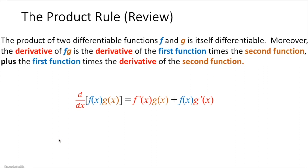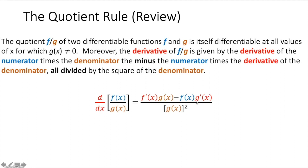Let's go ahead and review the product rule. Anytime you're taking the derivative of two differentiable functions multiplied together, you take the derivative of the first function, multiply it to the second function, and then add that to the first function times the derivative of the second function. The quotient rule says that anytime you have two functions being divided and you want to take the derivative, you take the derivative of the numerator times the denominator, minus numerator times the derivative of denominator, all over the denominator squared.